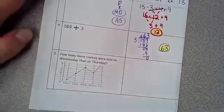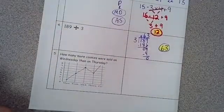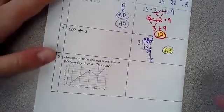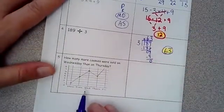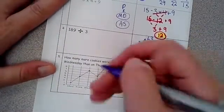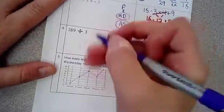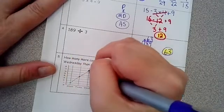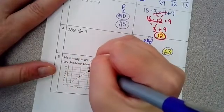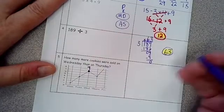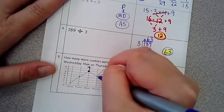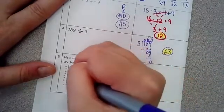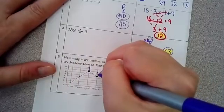Okay. Next one. How many more cookies were sold on Wednesday than on Thursday? Alright. So first you have to figure out Wednesday and Thursday. So I'm going to come to Wednesday. I'm going to put a little dot on it and then I'm going to label it. On Wednesday, there were seven cookies sold. Then on Thursday, I'm going to come right here and put a little dot. And on Thursday, there were five.